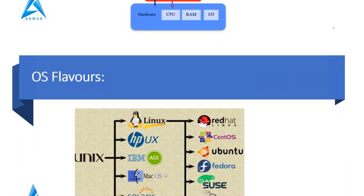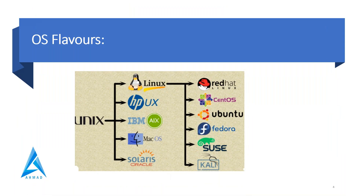In operating systems we have flavors, and my focus is on non-graphics operating systems. In that category the first one is Unix, and from Unix these operating systems were developed: Linux, HPUX, IBM AIX, Mac OS, and Solaris from Oracle.